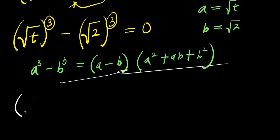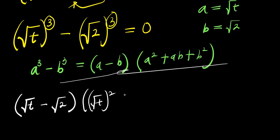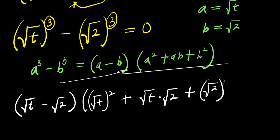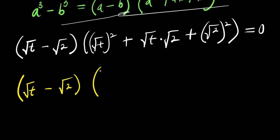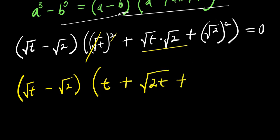So applying the identity, for a minus b we have root t minus root 2, times a squared — that is root t squared — plus root t times root 2, plus root 2 squared. This equals 0. Simplifying, root t squared is t, root t times root 2 is root 2t, and root 2 squared is 2.